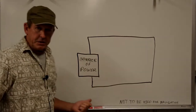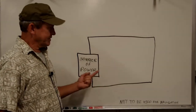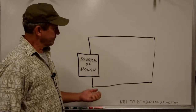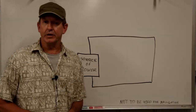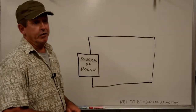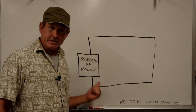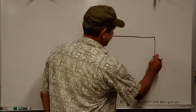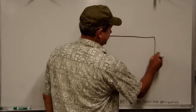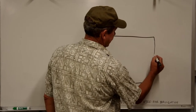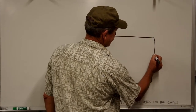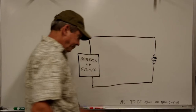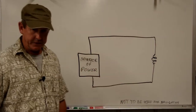So — basic electrical circuit — but what good is this? Electrons are flowing, but it's not doing any work. I would like this to do some work for me. So out here at the end, let's go ahead and add an appliance — let's say a light bulb.